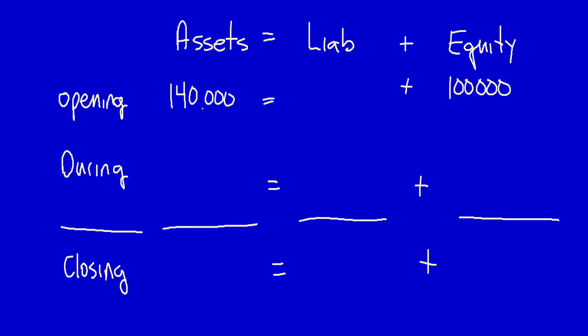By the end of the year, the business had assets of $210,000 and liabilities of $85,000. During the year, the business had new contributions by owners of $15,000. Contributions by owners go under equity, because contributions by owners increase owners' capital, which increases equity. They also had revenues of $162,000. Revenues are used to calculate profit, which is used to calculate retained earnings, which is used to calculate equity — so revenues increase equity by $162,000.